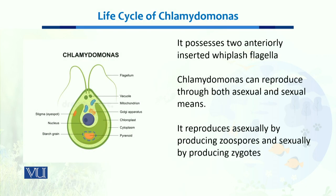When we talk about the structure of Chlamydomonas, as you can see here, it is an oval-shaped green algae and it has two flagella which are present on the anterior side. These flagella help it move from one place to another inside the water.